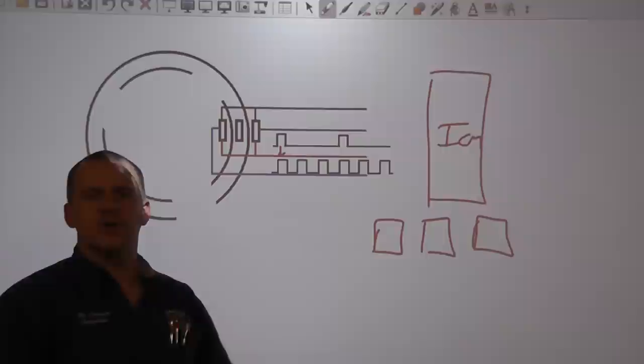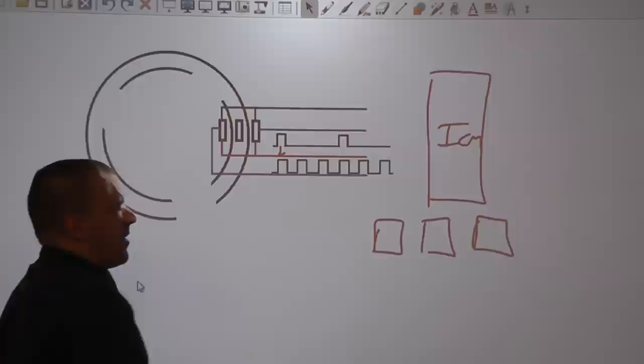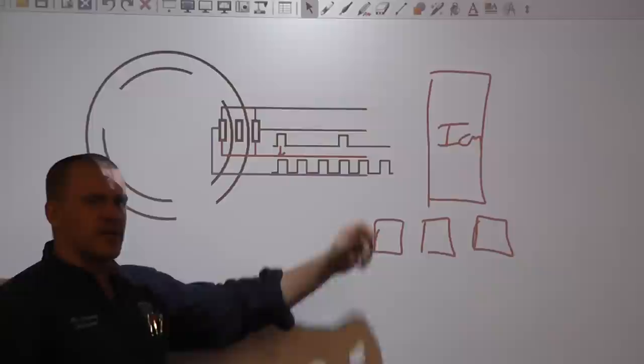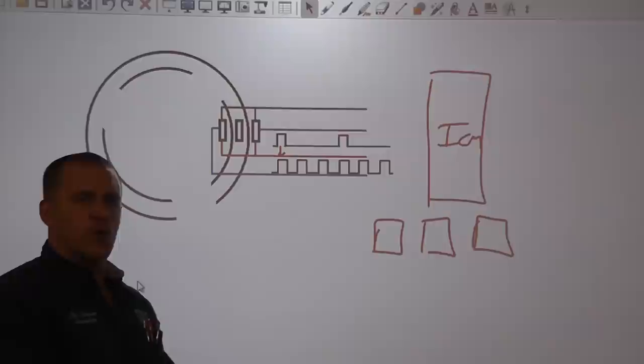We need both signals. The 1X is our sync signal; the 3X gives us piston position and RPM. The crank sensor signals feed into the ICM. The ICM conditions those signals, fires the coils, and also sends one of those signals to the computer for injection control and RPM measurement and piston position.